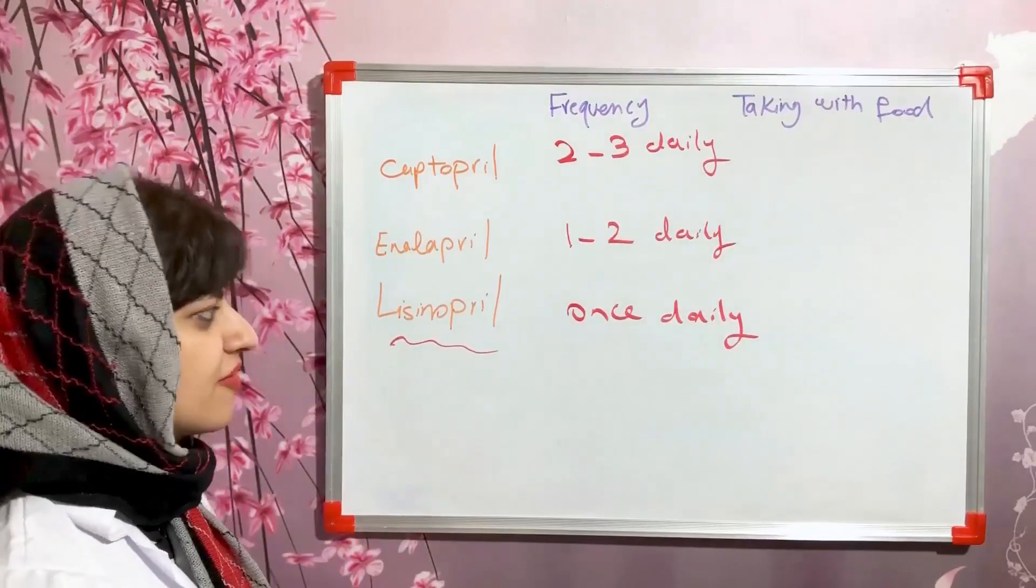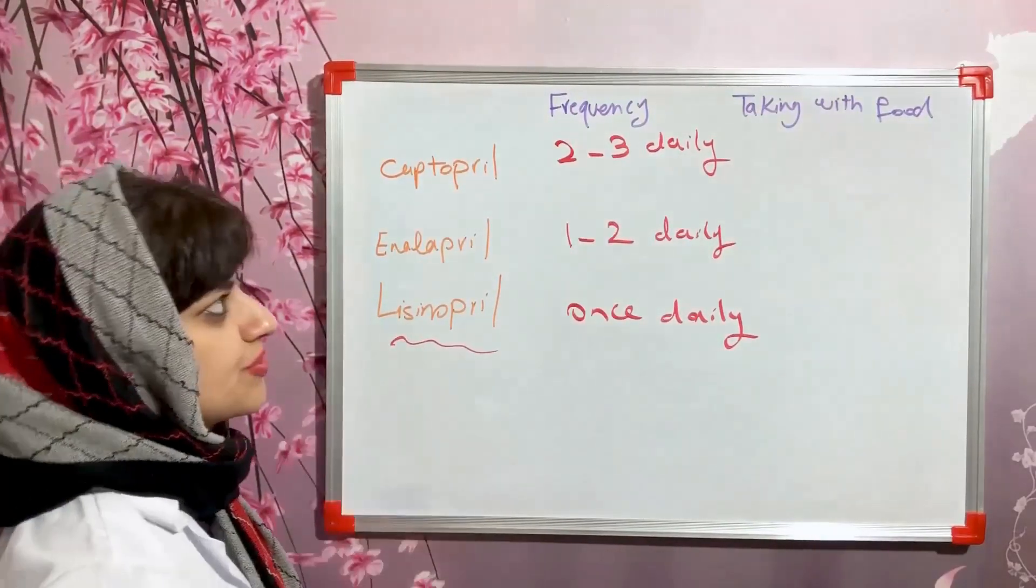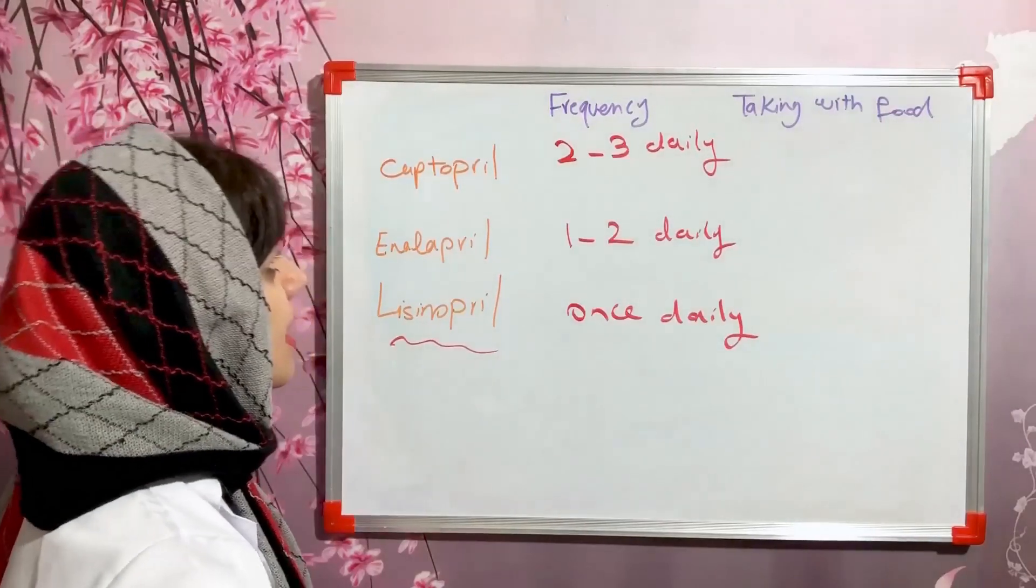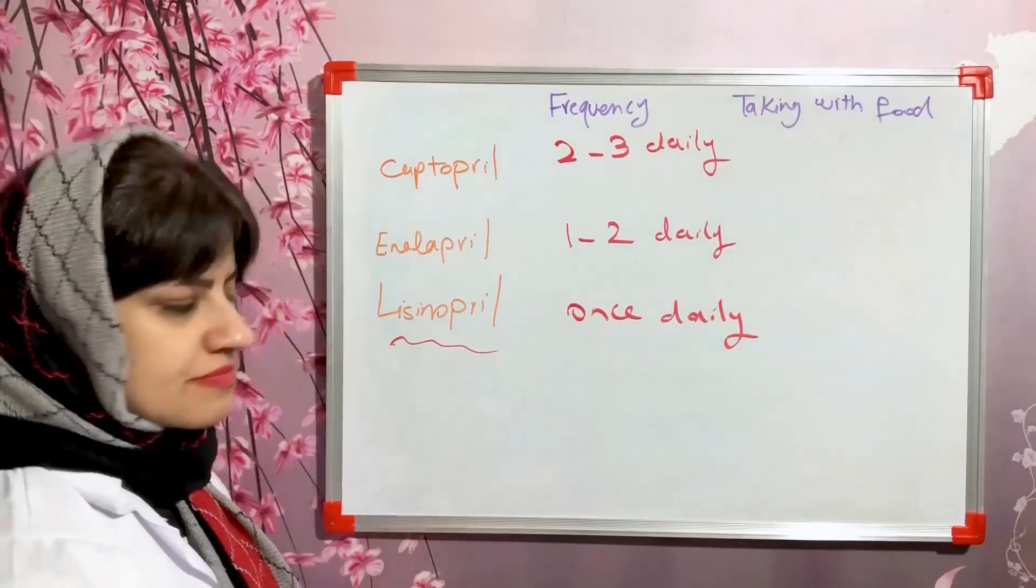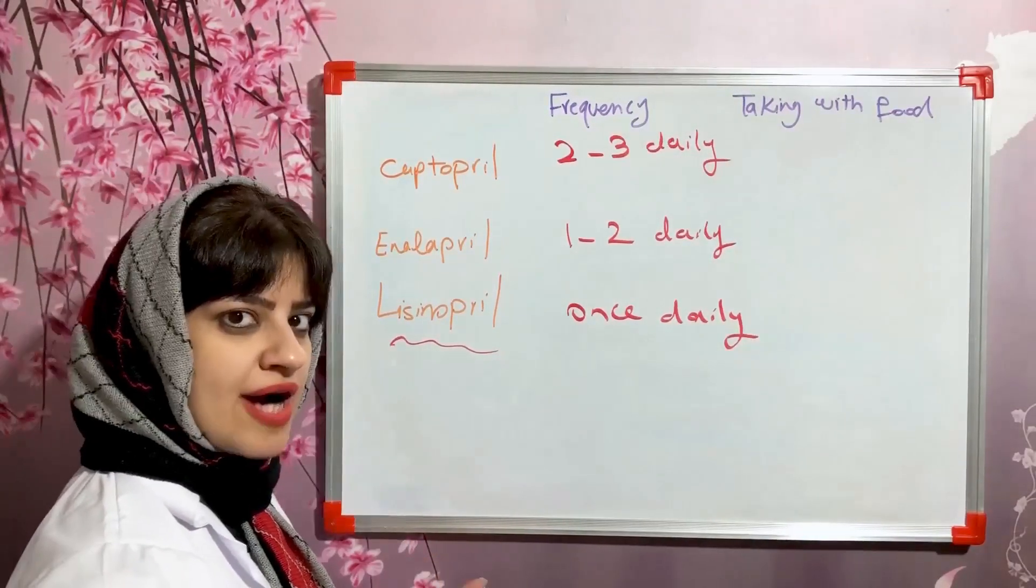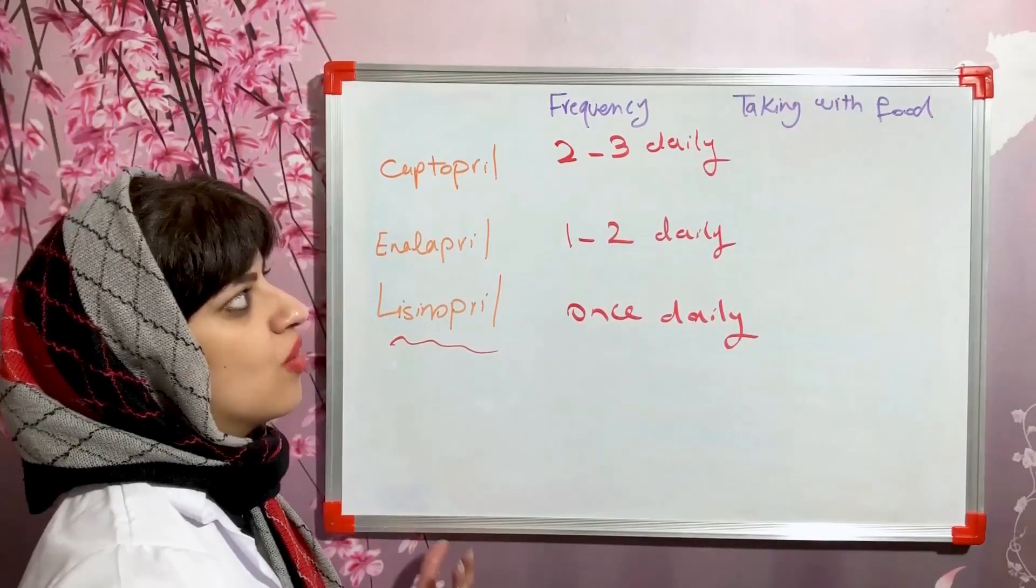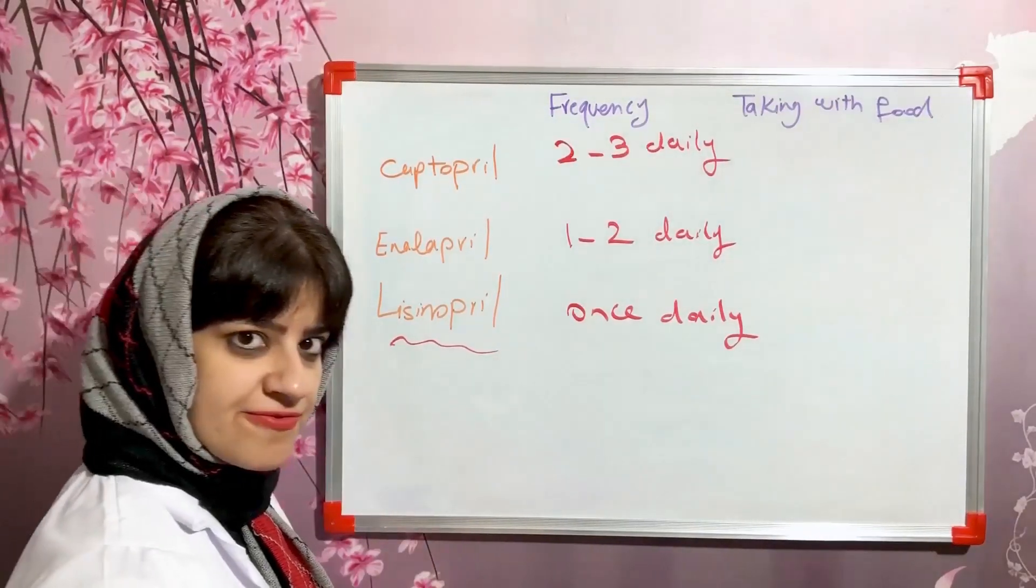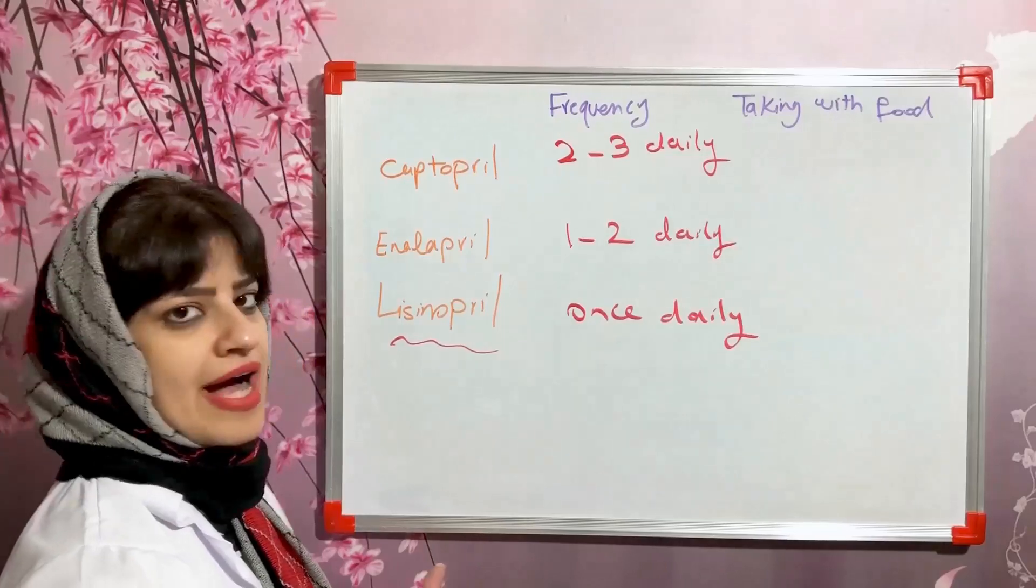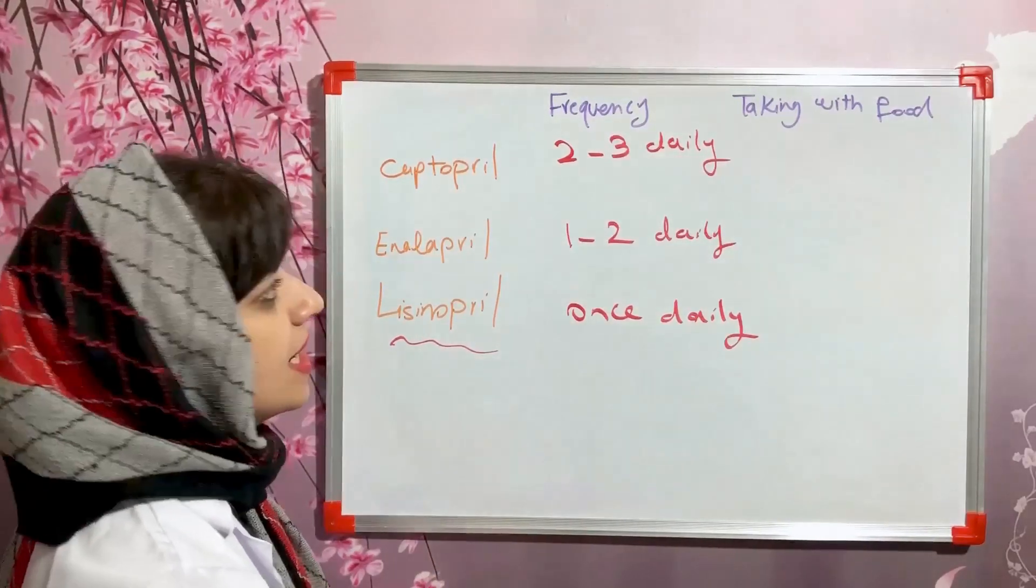So the longest half-life belongs to lisinopril. Should we take these with food or not? Captopril should be administered one hour before or two hours after food. Why? Because taking with food reduces the absorption of captopril around 30 to 40 percent.